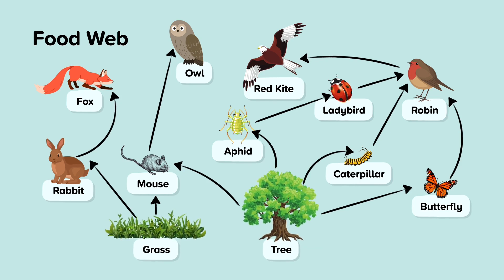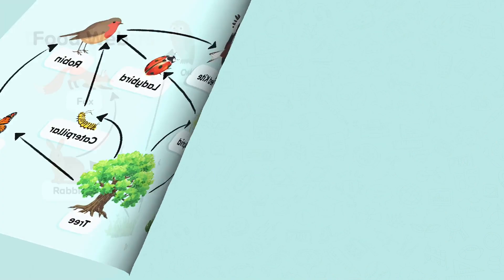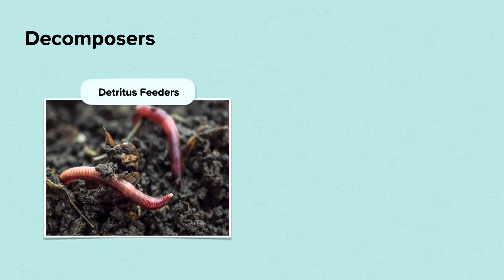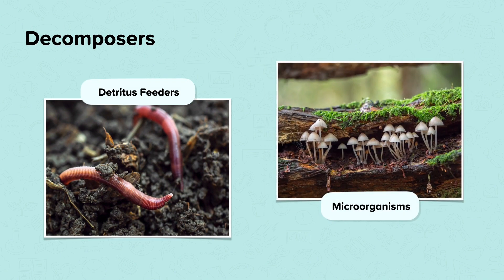How do these biotic food chains and webs link to the abiotic environment? When plants and animals die, they are broken down by detritus feeders, such as worms and microorganisms like fungi. Once this happens, the energy and nutrients are returned to the soil, to then be taken back up by the producers and moved along the food chain once again.